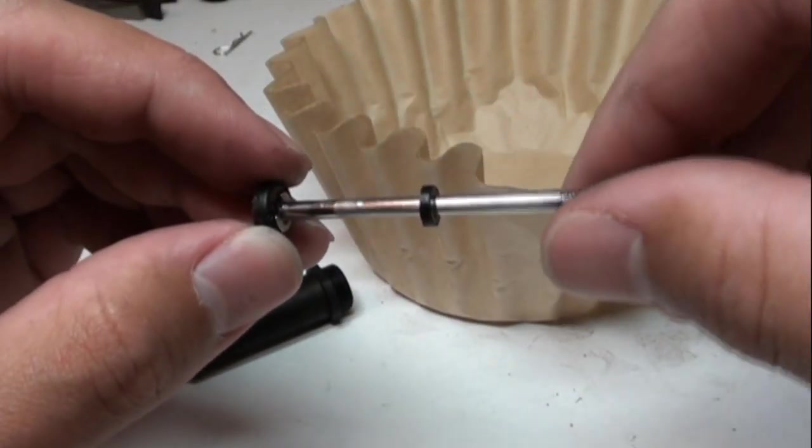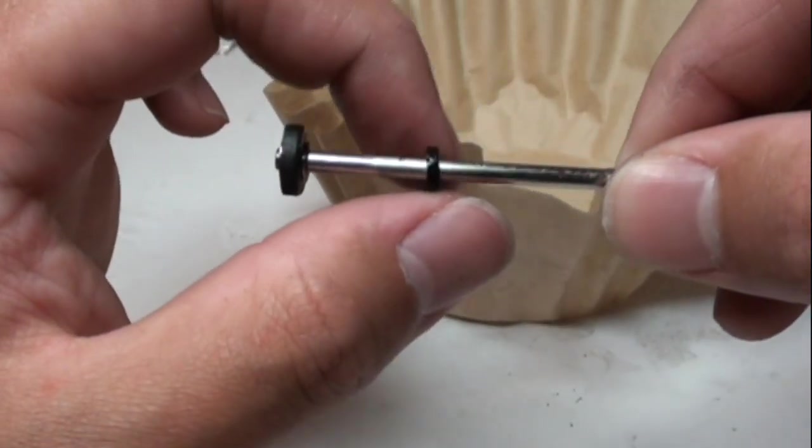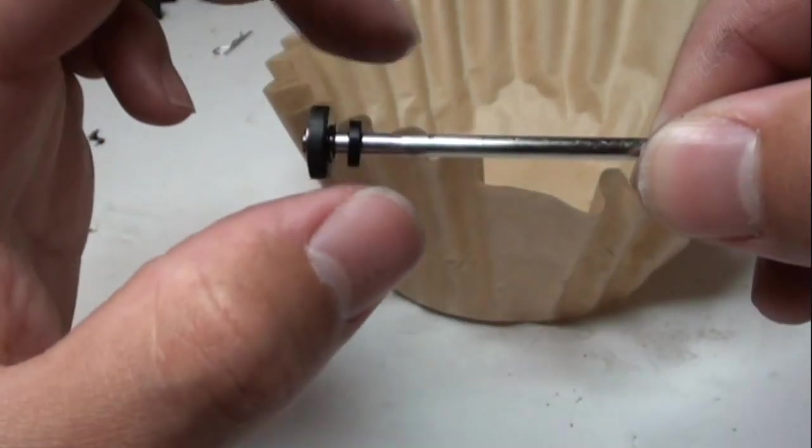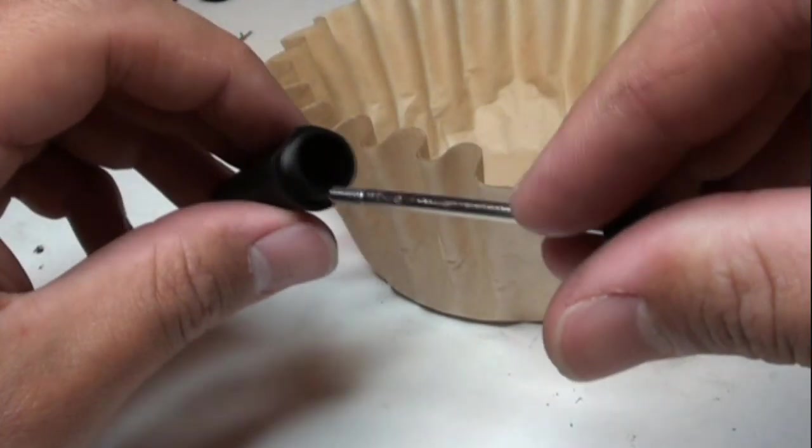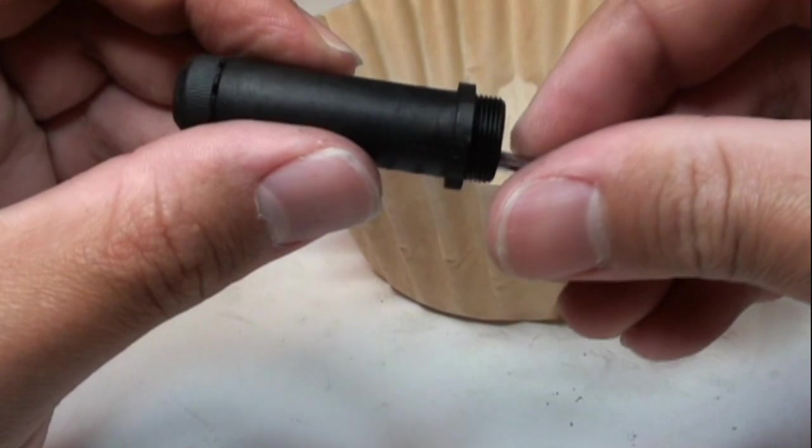As a quick note, with the rear shocks it does have this extra little washer on there. The front ones don't have it. But yeah, it goes on the rod before you put it back in.